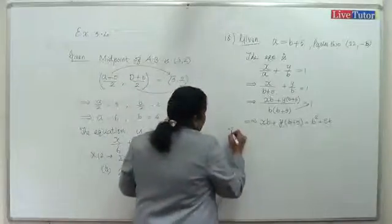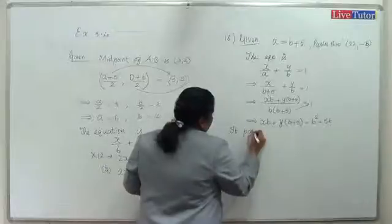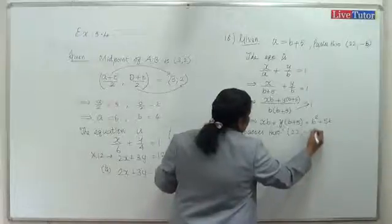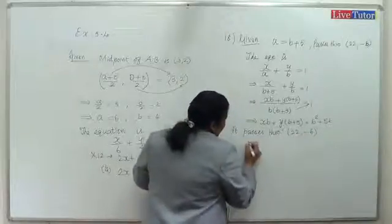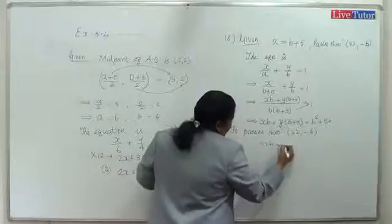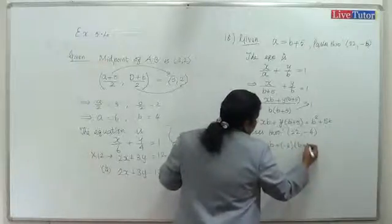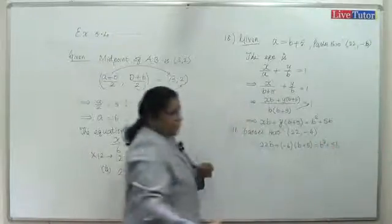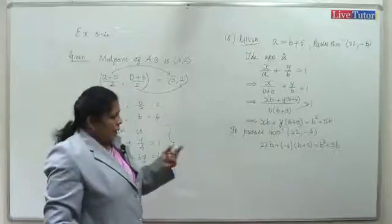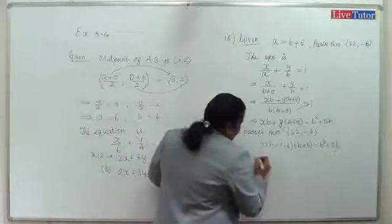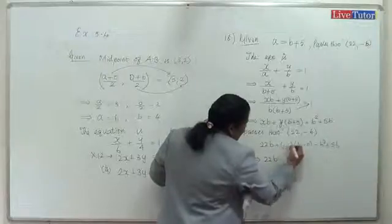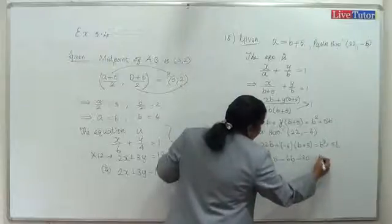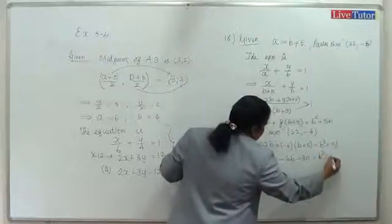Since the line passes through (22, -6), substituting gives: 22b plus (-6)(b plus 5) equals b squared plus 5b. Simplifying: 22b minus 6b minus 30 equals b squared plus 5b.